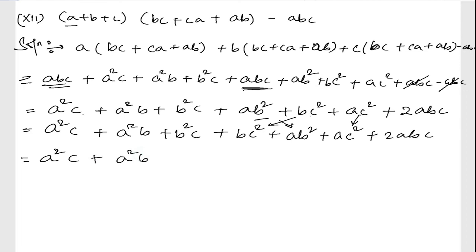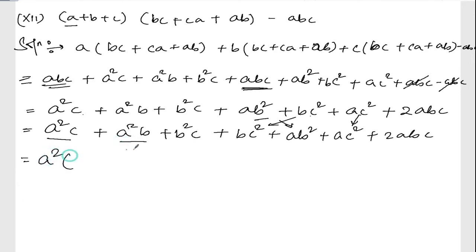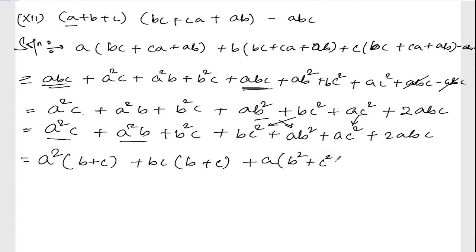Now let's factor by grouping. From a²c and a²b, a² is common, giving a²(b + c). From b²c and bc², bc is common, giving bc(b + c). From ab² and ac² and 2abc, a is common, giving a(b² + c² + 2bc), which equals a(b + c)².